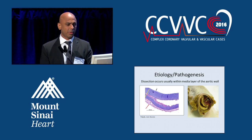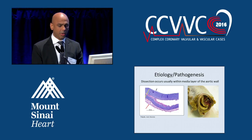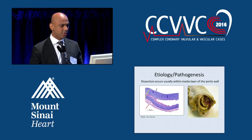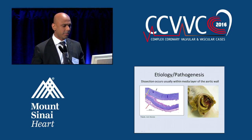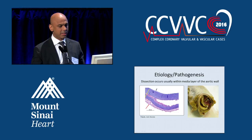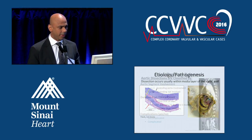When we're talking about dissection, it usually occurs within the medial layer of the aortic wall. A couple of terms I'm going to be using throughout the case: when I talk about true lumen, it's actually going to be the lumen enclosed by all three layers of the artery. The false lumen is where the blood is really not supposed to be — that's all the dissected area.